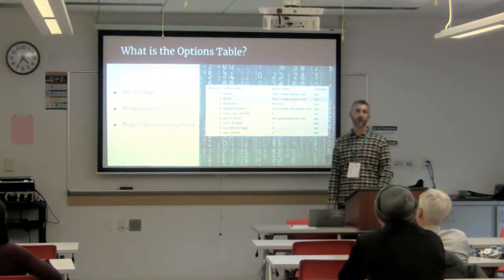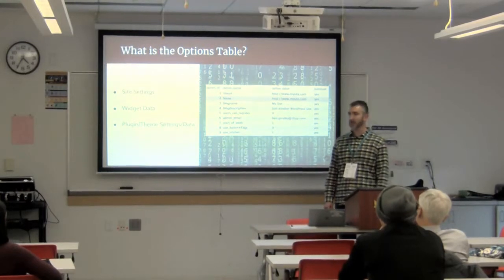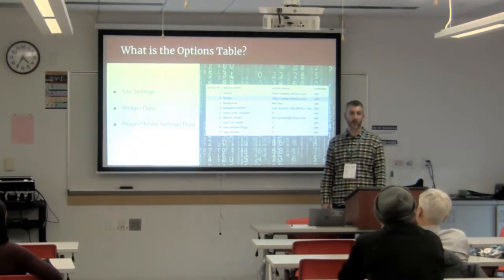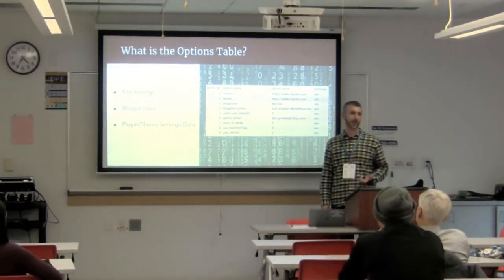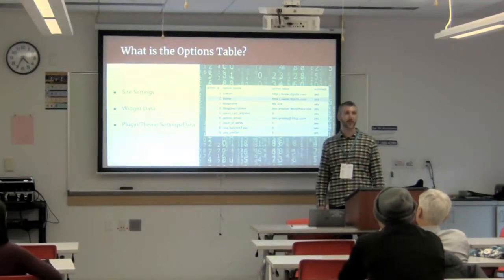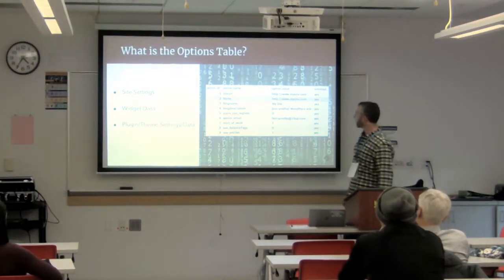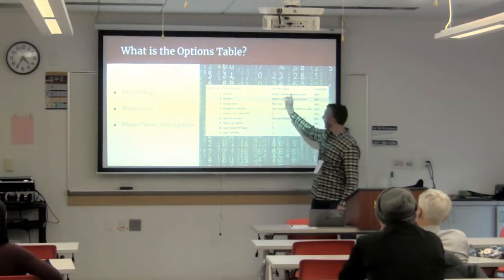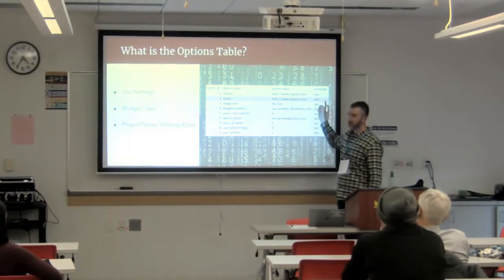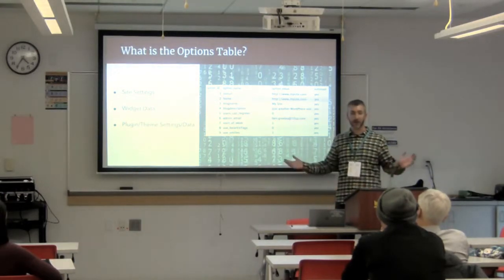A little background on what the WordPress options table is: it's where WordPress stores all sorts of site settings such as plugin settings, theme settings, and pretty much anything else that developers may want to store there. It's a pretty simple table — you specify an option name, a value for the option, and whether or not the option should be autoloaded into memory, and that's about it.